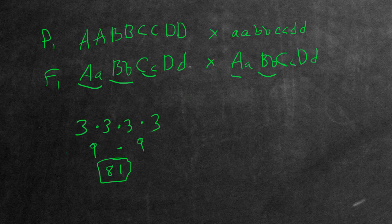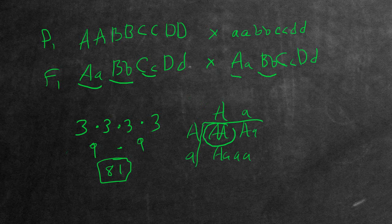What proportion of the F2 will be homozygous dominant for all of the genes? So homozygous dominant is equivalent to AA. Well, if you do the Punnett square again, you'll notice that there is a one-fourth ratio. In this Punnett square,